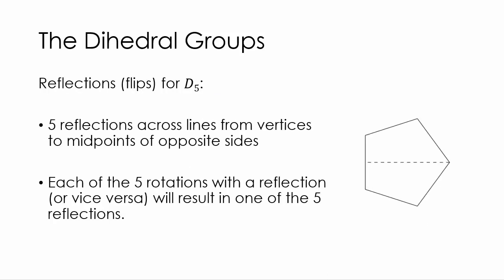So how about flips or what are more technically called reflections? For a d5, again because we have five sides, we have five reflections. Just like for a four sided, a square, we had four reflections. Remember we had horizontal, vertical, and then we had the two diagonals. So we had four reflections or four flips. With a d5, we have five reflections and all of them are going to occur from a vertice to the midpoint of the opposite side. Now if it's a hexagon, a six sided, it's going to be slightly different. So each of the five rotations with a reflection, or if we do it vice versa, will result in one of the five reflections.